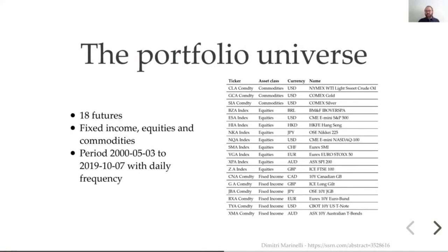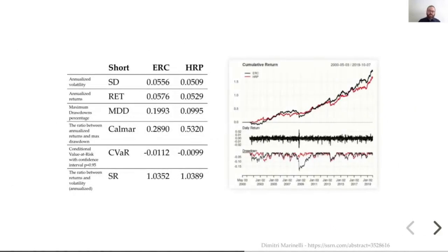The portfolio universe consists of 18 futures, covering a very long multivariate time series of 20 years, representing different asset classes. For this portfolio, we can backtest it, and these are the outcomes — here are the standard measures used in finance, and the performances along the 20 years.